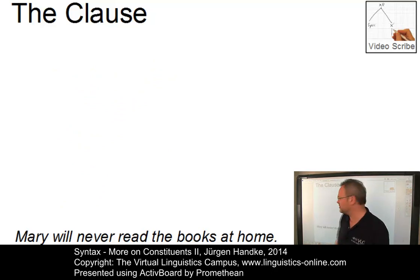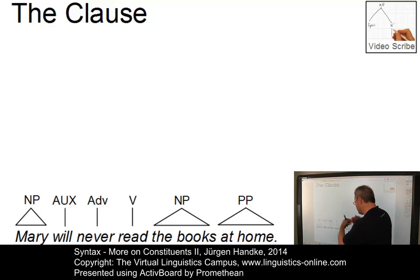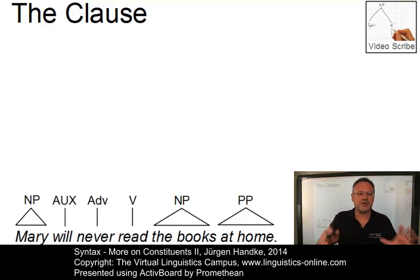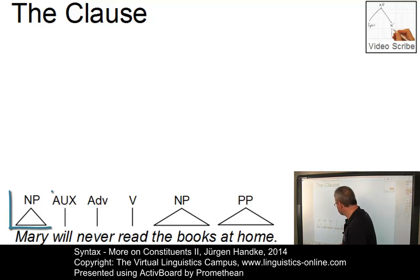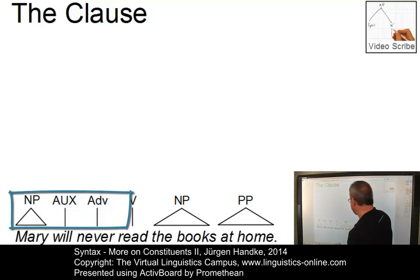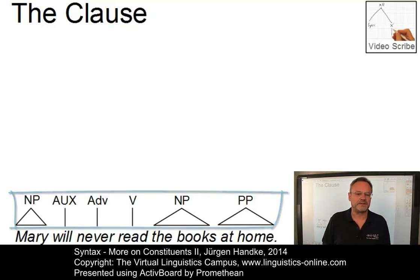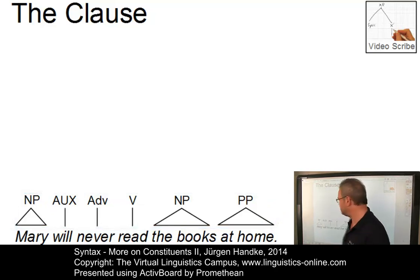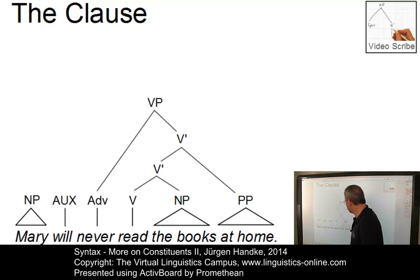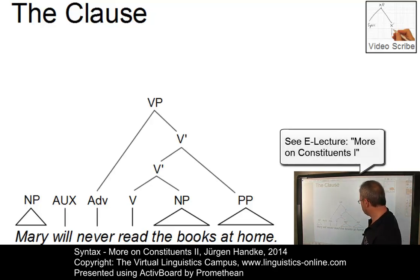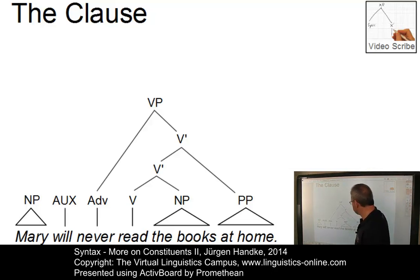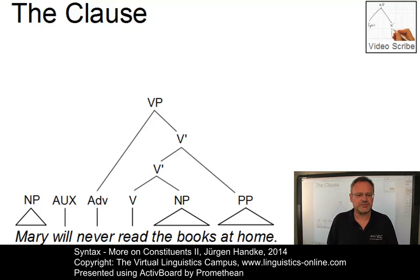Let's perform a rough categorical analysis first. By rough I mean a categorical analysis where I present some of the phrasal categories by means of triangles, indicating that the internal structure is not relevant here. Mary is of course a noun phrase. Will is an auxiliary verb. Never is an adverb. Read is a verb. Then we have the noun phrase the books and the prepositional phrase at home. The string never read the books at home is of course a verb phrase, as we analysed already in More on Constituents 1. The verb phrase has a specifier never and two internal verb bars, which have the noun phrase and the prepositional phrase as daughters respectively. So this is our starting point.